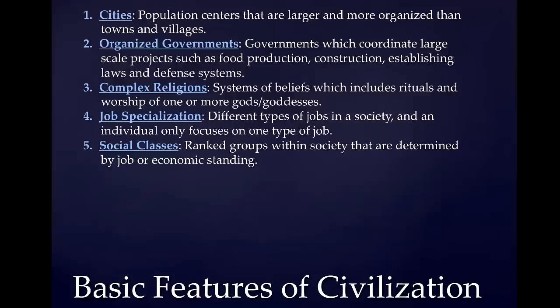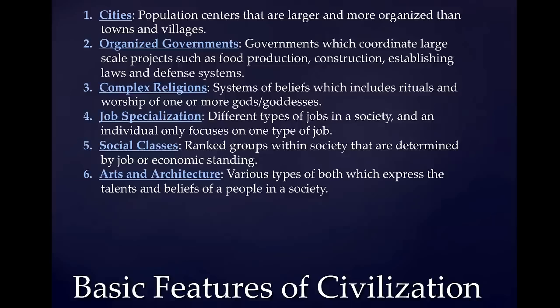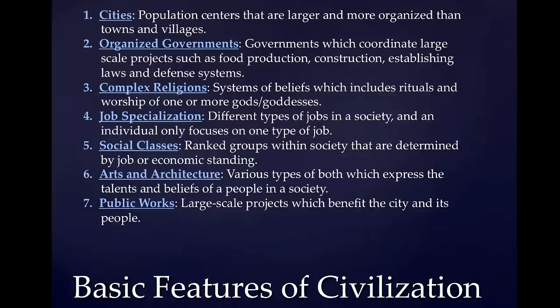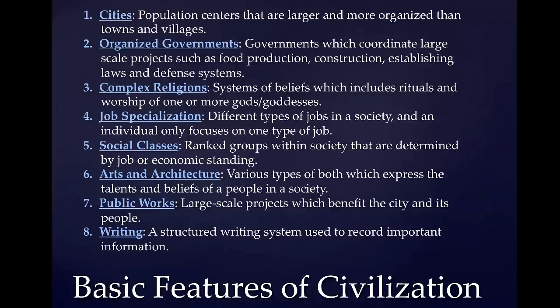The sixth feature is arts and architecture. All across the world, different societies develop their own types of arts and architecture, showing off not only their talent but also their beliefs and values. The seventh is public works — large-scale projects, usually organized by the government to benefit the city, such as the pyramids in Egypt. And the final one is a system of writing, which usually develops from use in government or religion and then becomes an important record-keeping system in a society.